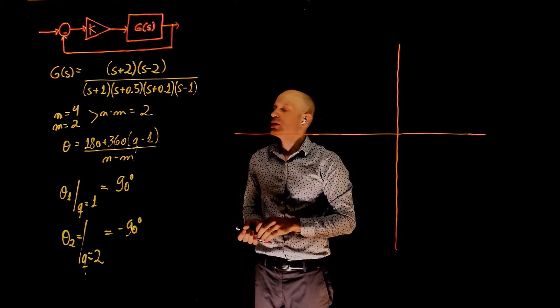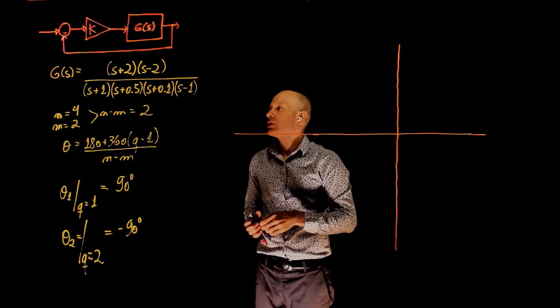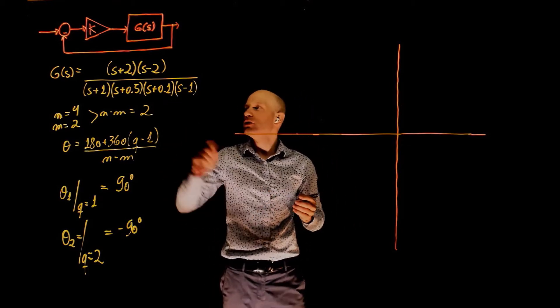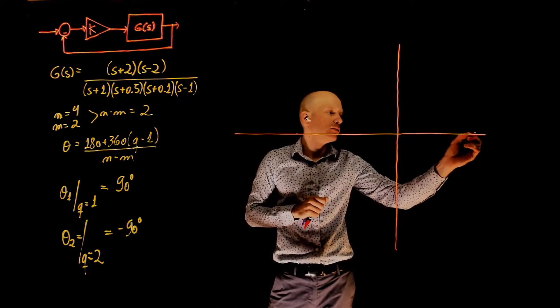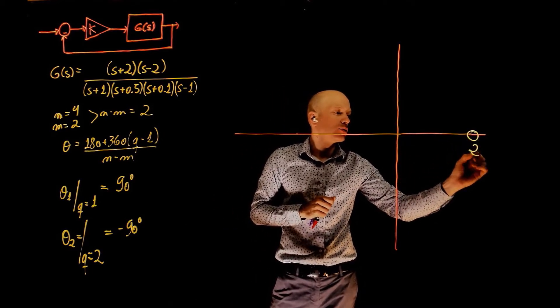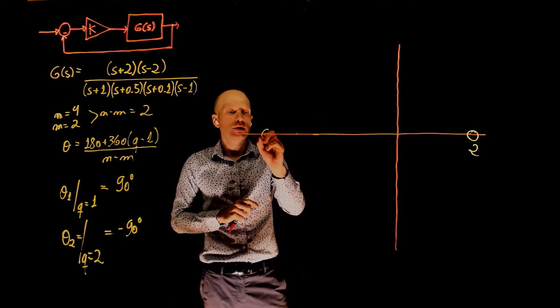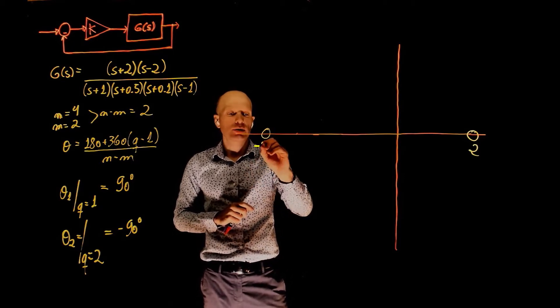Let's now locate the poles and zeros on the s-plane. Starting with zeros, we have a zero at negative 2 and a zero at positive 2. So here is one of the zeros, and here is the second zero.